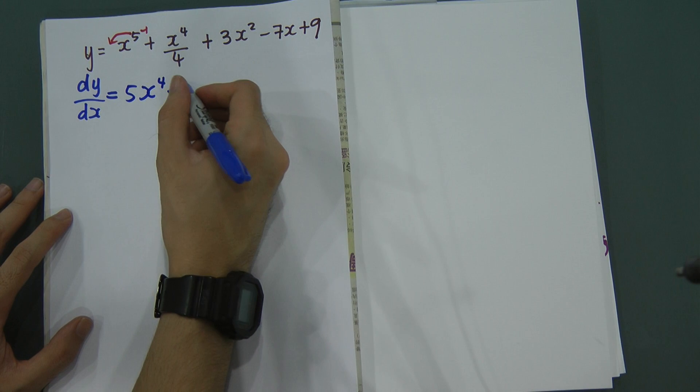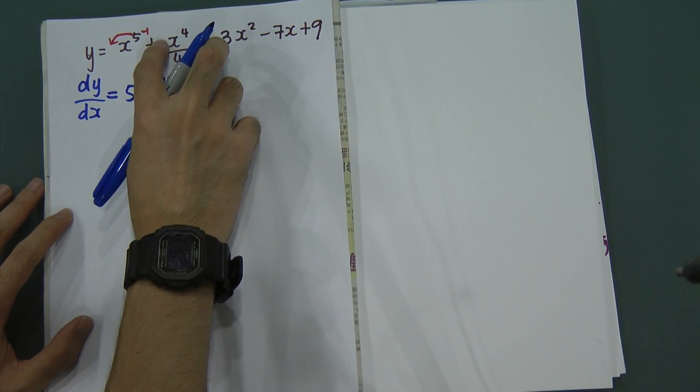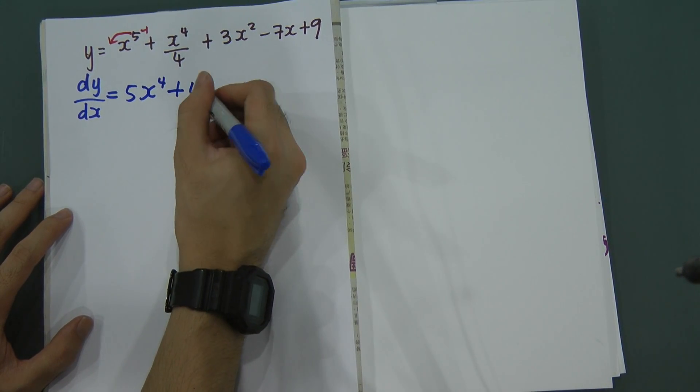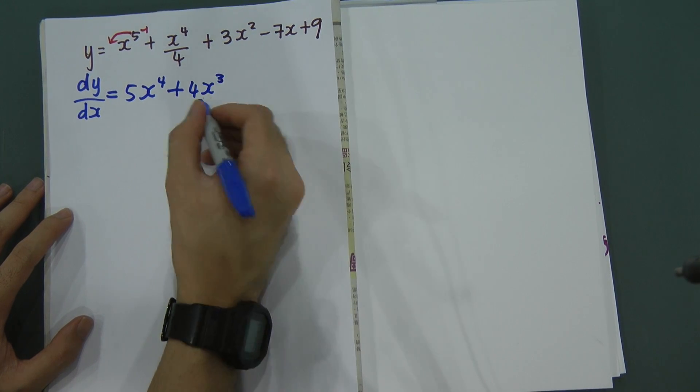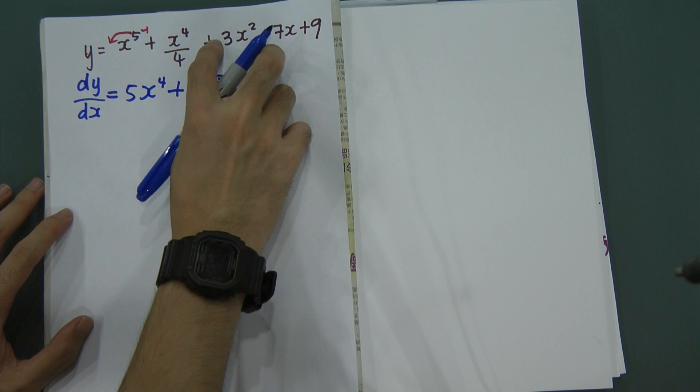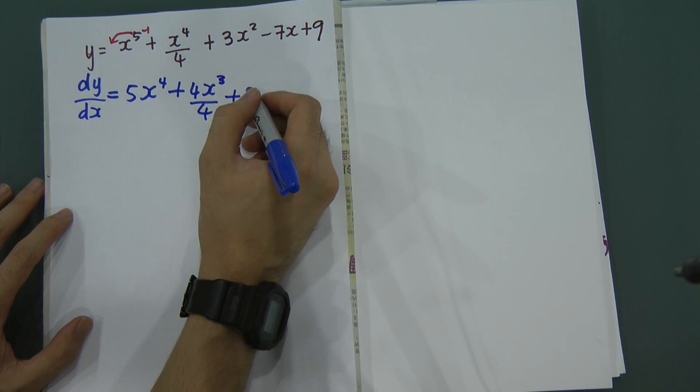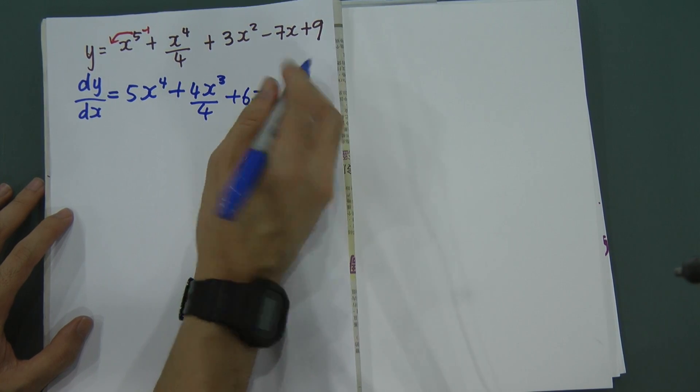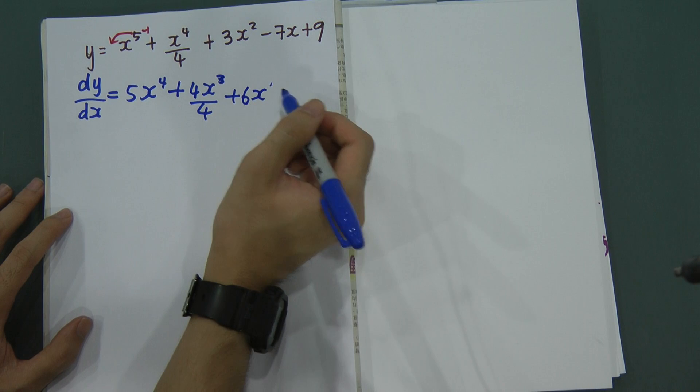Same for this one plus, x power of 4, 4 move in front minus 1. 4 move in front, we will get 4x, 4 minus 1, we will get 3 divided by 4. Plus, 2 move in front will become 2 multiple 3 is 6. x, 2 minus 1, we got 1. So normally we didn't write 1 here.